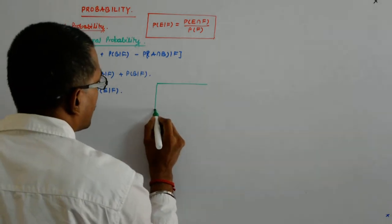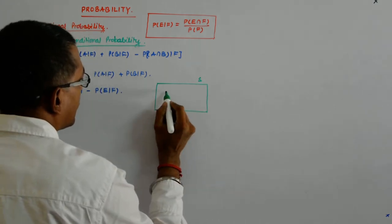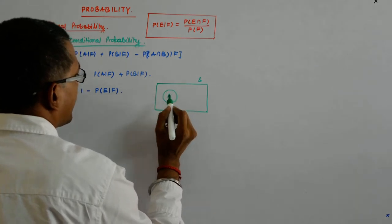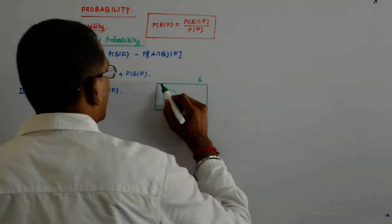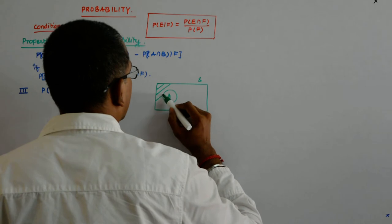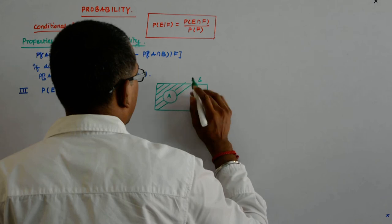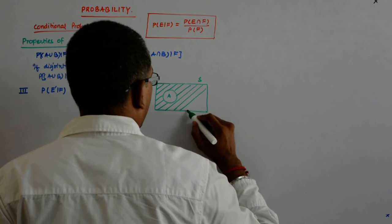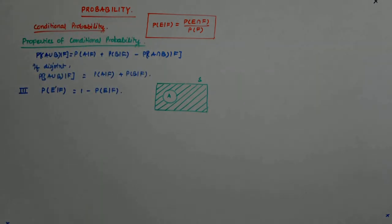If we are talking about a sample space or the universal set, and we have A as our set, this is A. Then A complement is what? Everything apart from this. So, this is A complement. Everything apart from this is A complement.